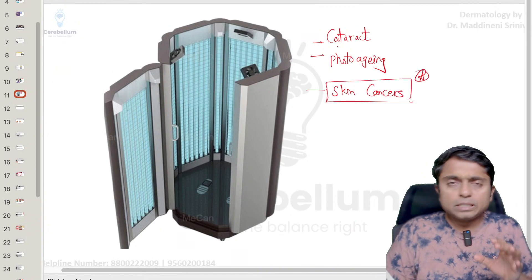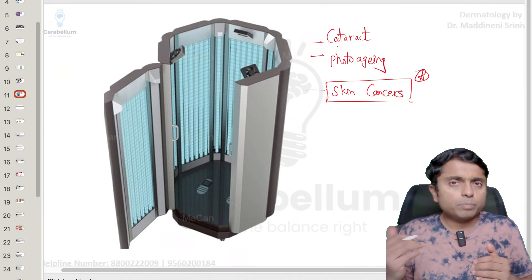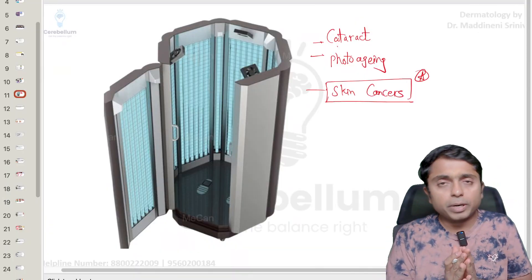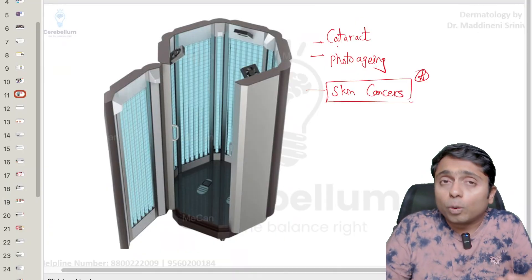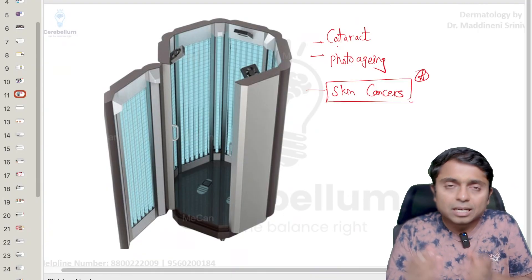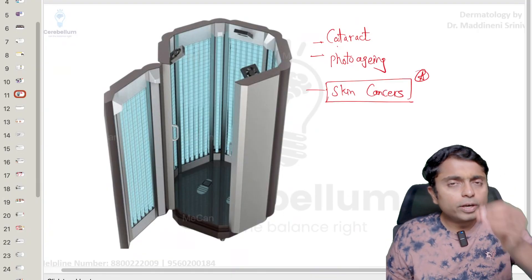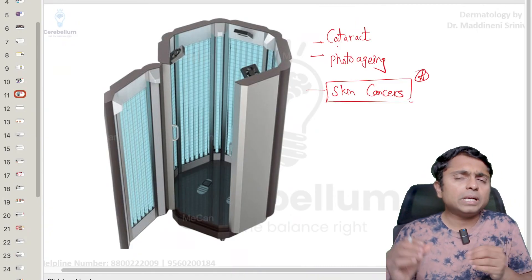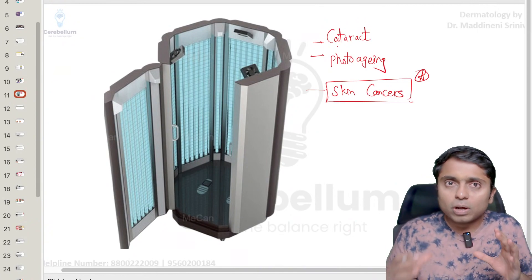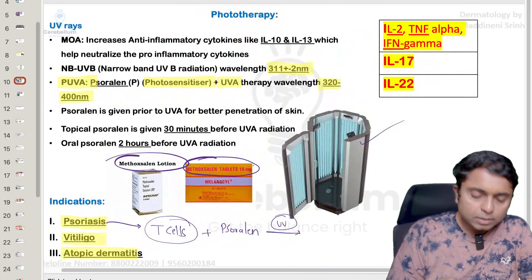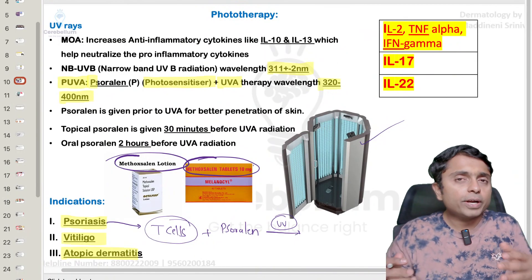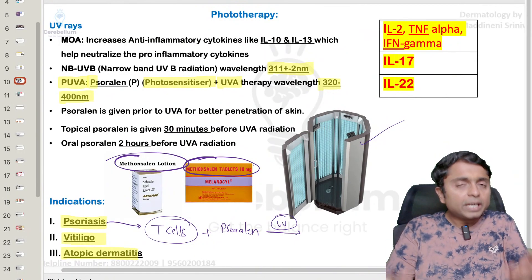Because of all these adverse effects, whenever we give PUVA therapy we always try to combine it with another form of treatment — it could be topical treatment or, more often, systemic medications such as methotrexate, acitretin, or even biologics. Coming back to the topic, for the PUVA therapy treatment modality, we ask the patient to come at least two to three times a week.